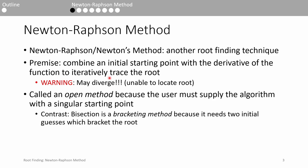Bisection was referred to as a closed method because it requires an initial interval which bracketed the root. On the other hand, Newton-Raphson is known as an open method because you only need to provide the algorithm with one starting point.